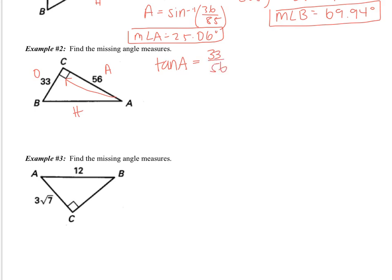Now, at this point some of you are going to want to divide by tangent — you can't divide by tangent. Tangent and A right now are together; they're a package. It's almost like they're married. So the way that we break them up is we introduce the inverse. So we take the inverse tangent on the left side and the inverse tangent on the right side. Examples of inverses are like adding, subtracting, multiplying, and dividing — they undo each other. So inverse tangent and tangent disappear, and I end up with angle A equals the inverse tangent of 33 over 56.